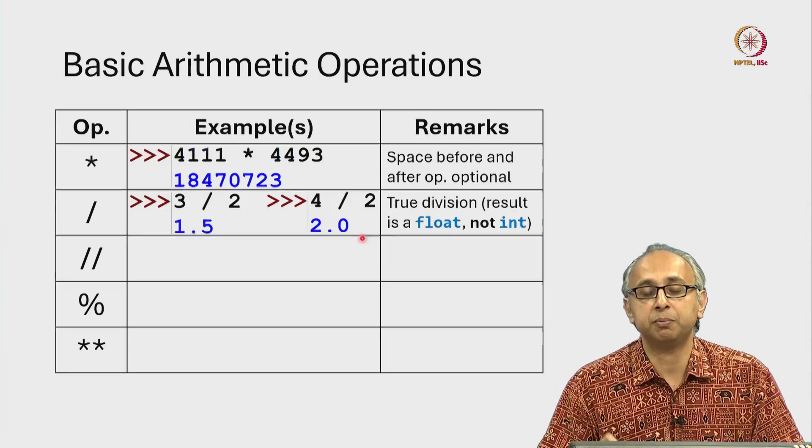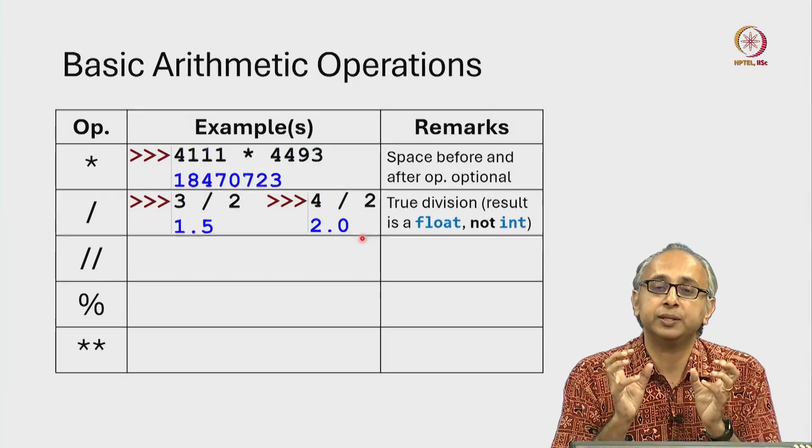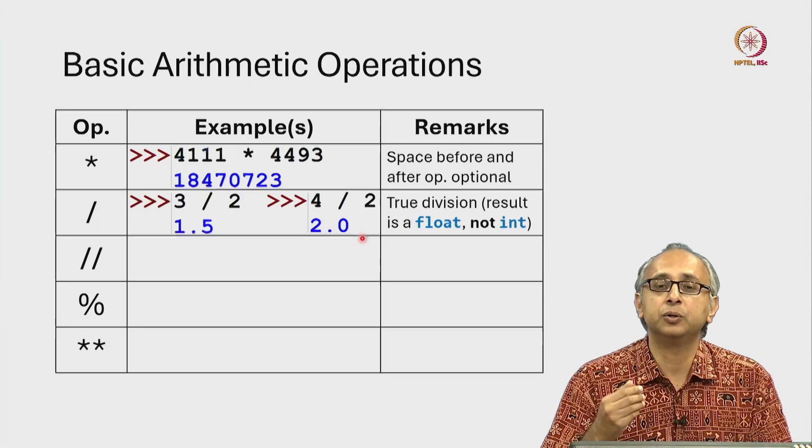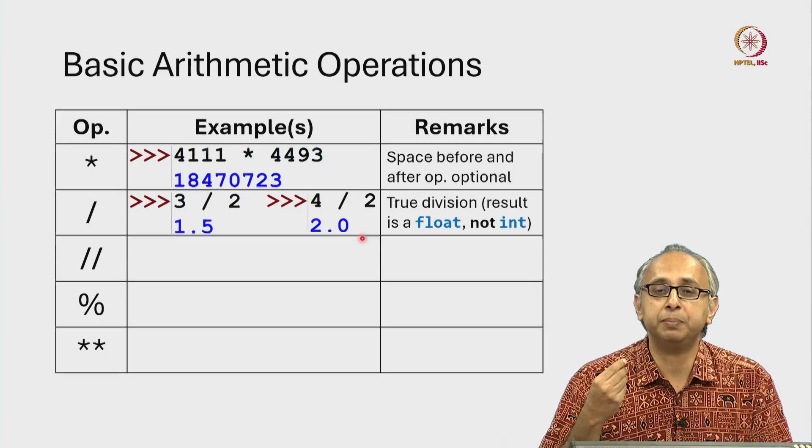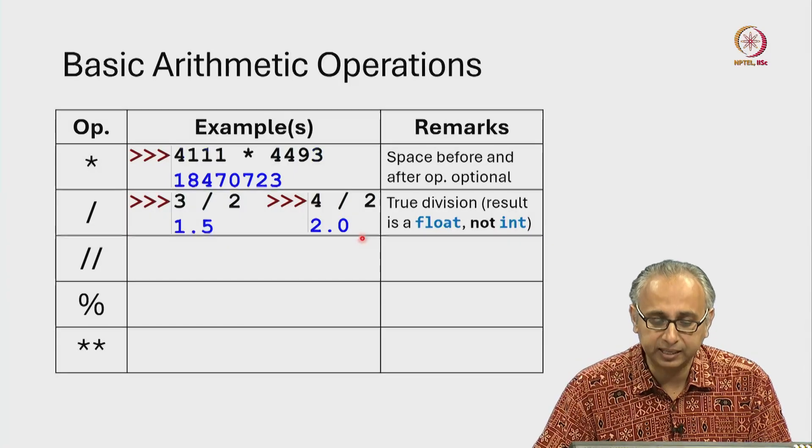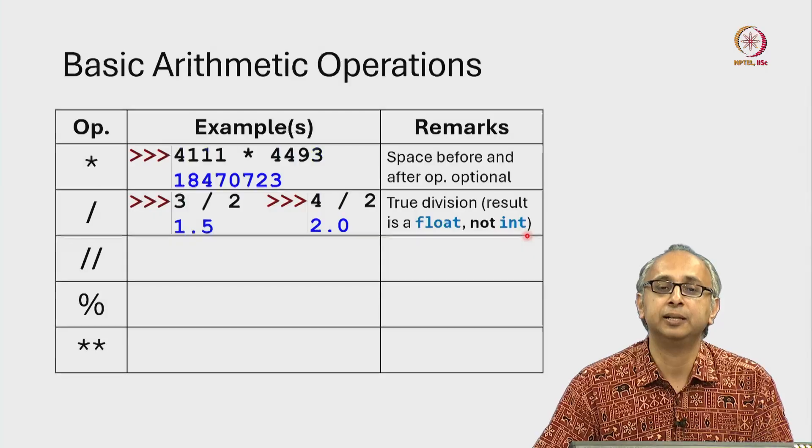So it's important to remember that even if you are operating with integers, when you do true division, the answer will always be a float. It will not be an integer and the exact difference between a float and an int will be clarified later on.